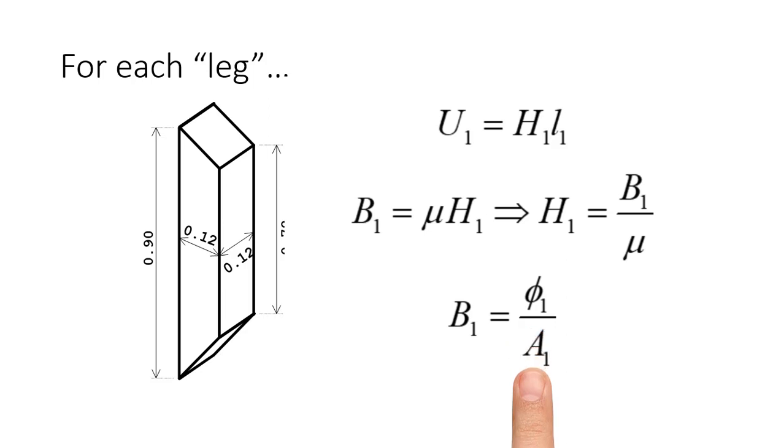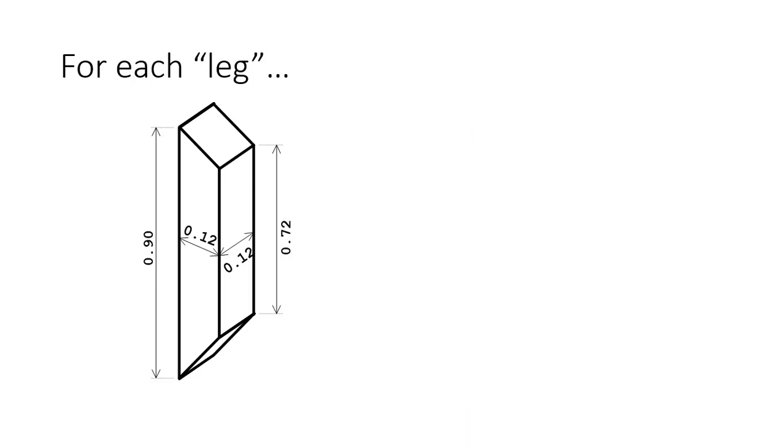Well, there is a stop. With the flux and the cross-section area, I compute the flux density. With the flux density and mu, I compute H. Right. So let's begin by computing the cross-section area of the flux. A₁ = 0.12 times 0.12. That is the area that the flux will cross in that leg.